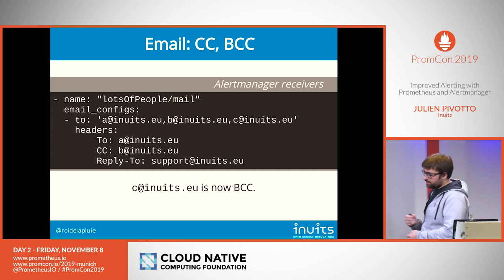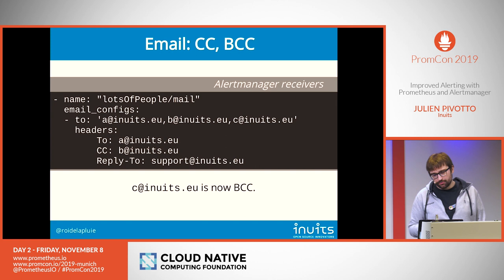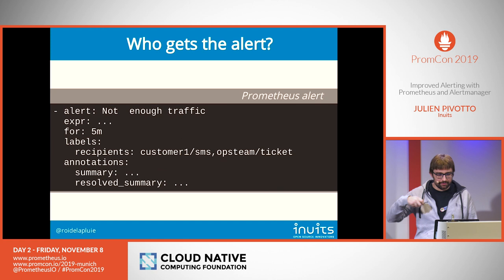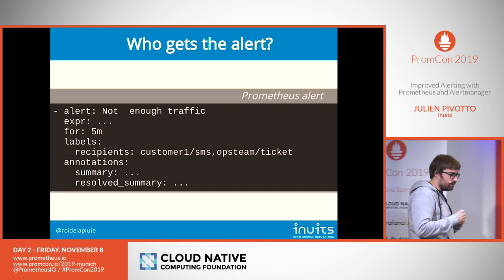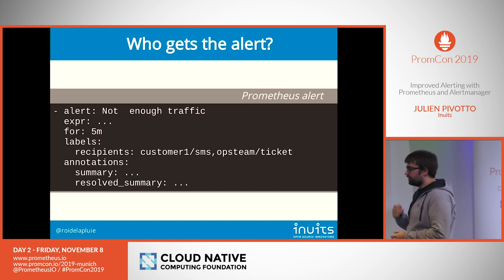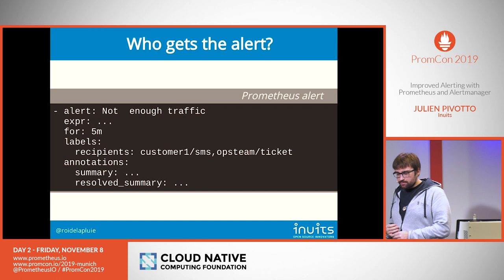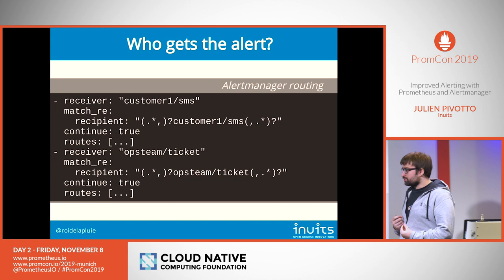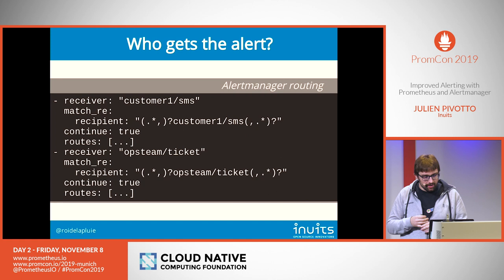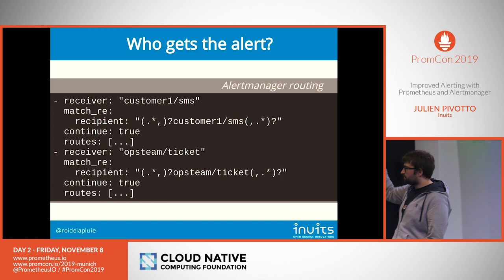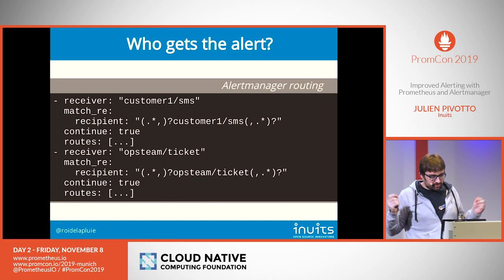How do we use all these receivers? We use a list in our alerts. I write my alert, I have a label called 'recipients', and I just say: I have not enough traffic, I'll send an SMS to the customer and create a ticket for the operations team. That's explicit — you know there will be an SMS to the customer and the team will get a ticket. In the alert manager configuration, we have a first-level route for each receiver with a regex match. If the receiver name appears between two commas in the recipients label, we go to that receiver. We use continue:true so we go through the full list of recipients.